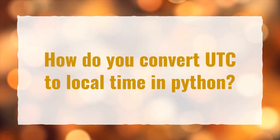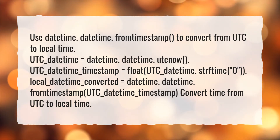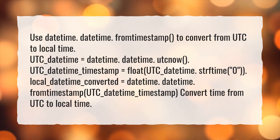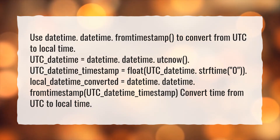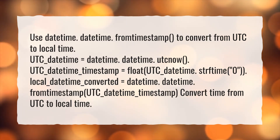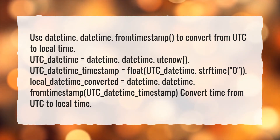How do you convert UTC to local time in Python? Use datetime.datetime.fromtimestamp() to convert from UTC to local time. utc_datetime = datetime.datetime.utcnow(). utc_datetime_timestamp = float(utc_datetime.strftime('%s')). local_datetime_converted = datetime.datetime.fromtimestamp(utc_datetime_timestamp). This converts time from UTC to local time.